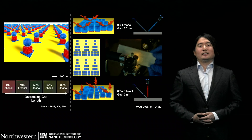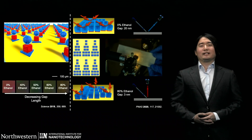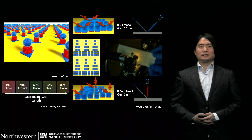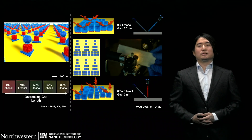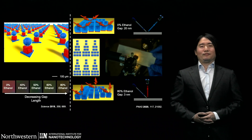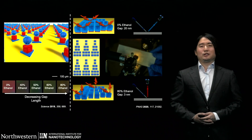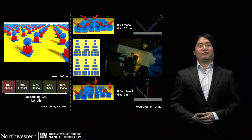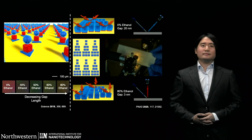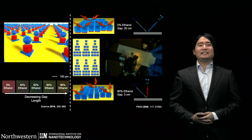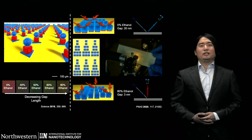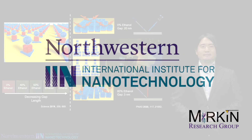Our colloidal matter can be ideal candidates for the next-generation optical metamaterials — for controlled transmission for lenses, reflection for mirrors, absorption for absorbers, and refraction for deflectors. Using DNA as a programmable bond, we can create exciting new possibilities. Thank you for watching!